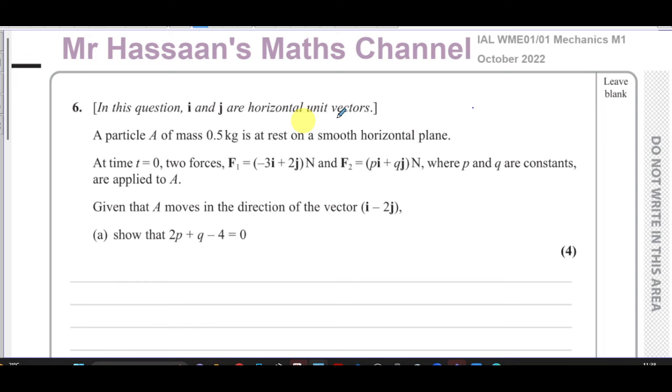This question here is all about vectors. We're told that there's a particle A of mass 0.5 kilograms at rest on a smooth horizontal plane.